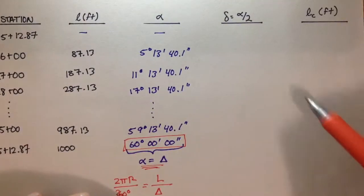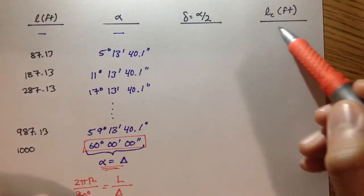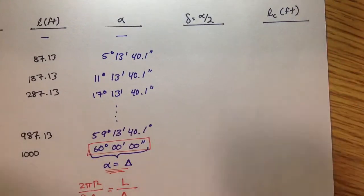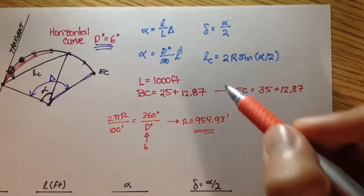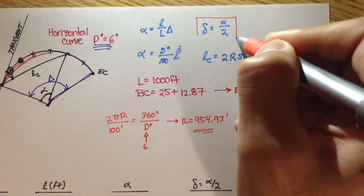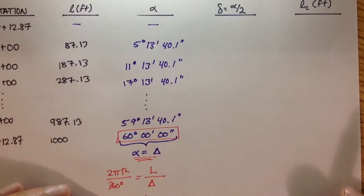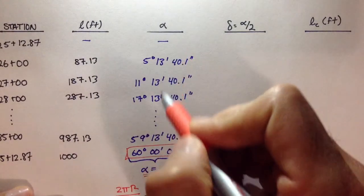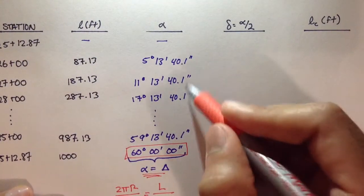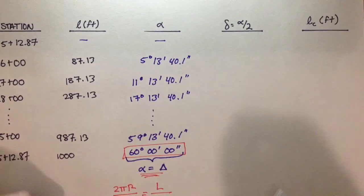And after we figure out what the deflection angle is, we can figure out what LC is. Delta up here is actually really easy to solve. Delta, or little delta, is equal to alpha over 2. And alpha is this column right here. So everything in the alpha column, we simply divide by 2.